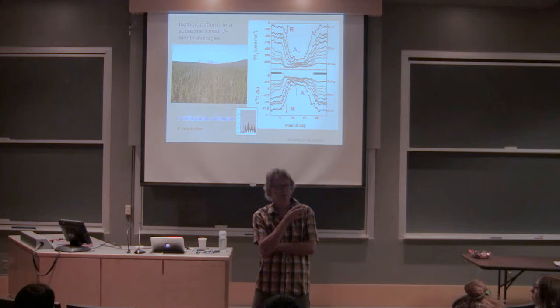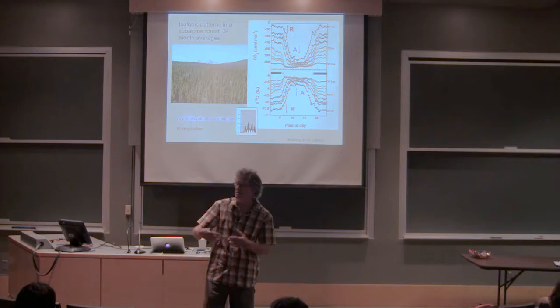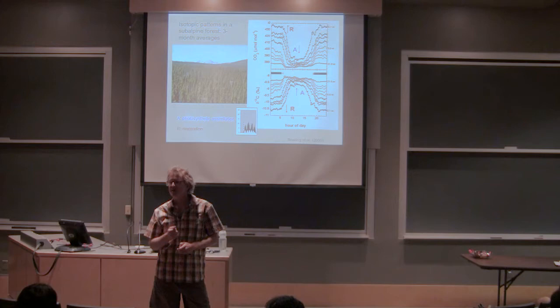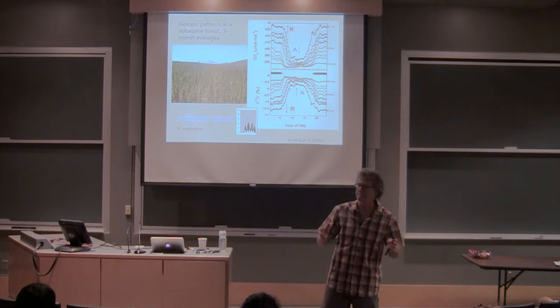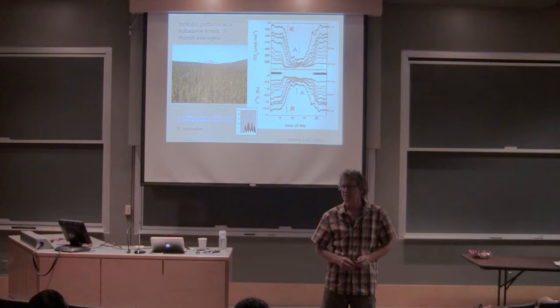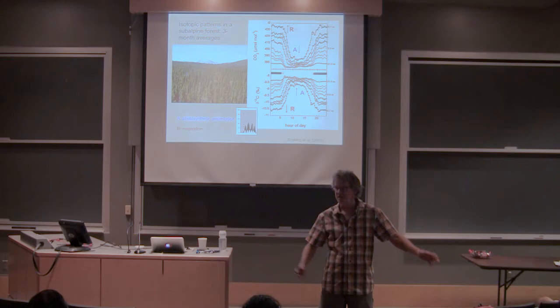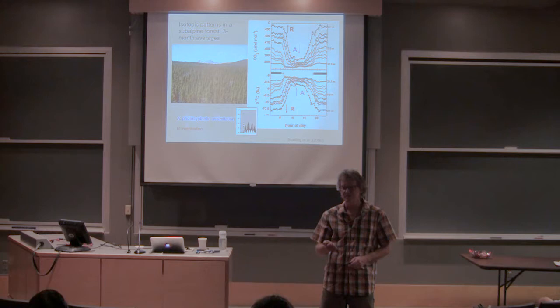Sun leaves and shade leaves differ in their isotopic composition due to physiology: different light environments, different nitrogen allocation, different amounts of Rubisco, different discrimination, and probably water relations differences too. However, most photosynthesis occurs in sun leaves, and the flux-weighted average of the whole canopy is what moves through the phloem down to the roots — the live carbon that organisms operate on within the ground. Root respiration is a big component of soil respiration, and leaves that differ in isotope composition fall off and get decomposed as well.